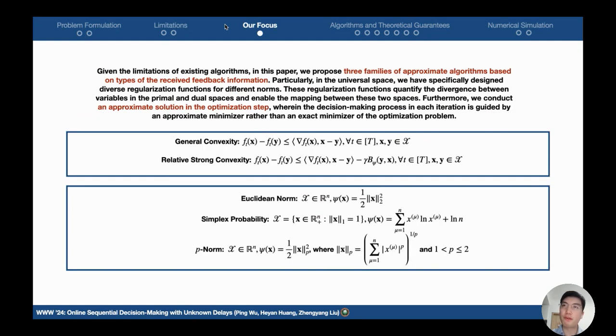In our paper, we propose three families of approximate algorithms based on the types of the received feedback. We consider general convexity and relatively strong convexity, and apply our algorithms to Euclidean norm, Simplex, and p-th norm.